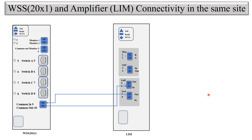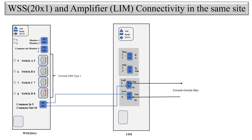This is all about WSH20X1 and amplifier physical connectivity. Port number 5 and port number 8 are connected to the outside fiber, going towards the far end. These switch ports are connected towards the FIM to pass the traffic and to drop the circuit.